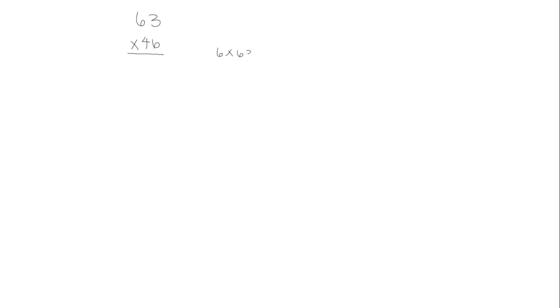Let's look at one more: 63 times 46. We're going to think that the first thing we're doing is 6 times 63. So let's look at that as one problem. We're going to multiply 3 times 6, which is 18. Then 6 times 6 is 36, plus 1 is 37, as our first partial product.